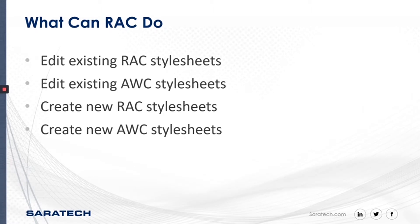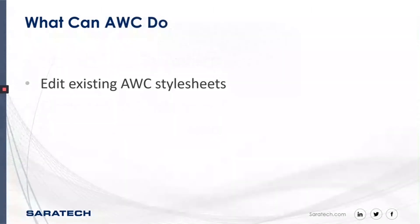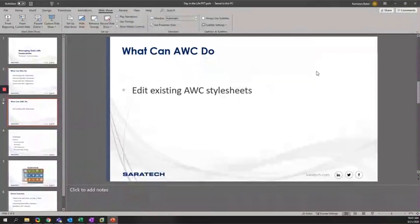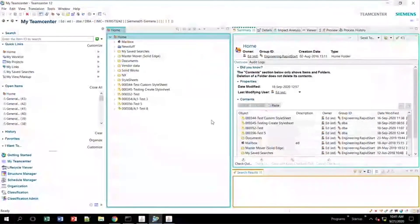For Active Workspace, it can only do one thing — it can only edit existing Active Workspace stylesheets. It can't create anything new and it cannot touch anything in RidgeClient. I will go over one example of how to edit existing Active Workspace stylesheets from within Active Workspace, but it'll mostly be inside RidgeClient.